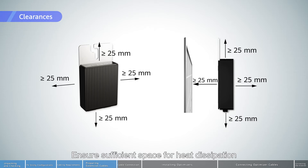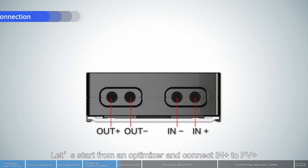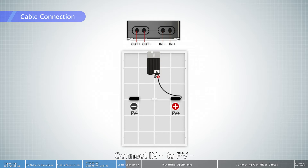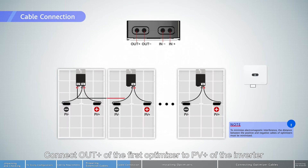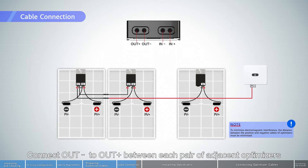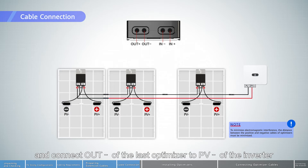Ensure sufficient space for heat dissipation. Starting from an optimizer, connect the input positive to PV positive, and connect the input negative to PV negative. Connect the output positive of the first optimizer to PV positive of the inverter using the extension cable. Connect output negative to output positive between each pair of adjacent optimizers.